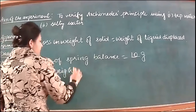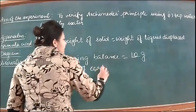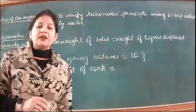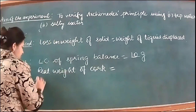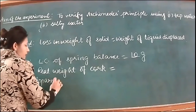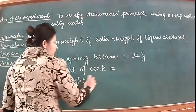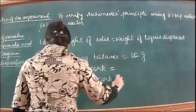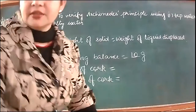We will find the real weight of the cork. Real weight means the weight of the object in air. The other is apparent weight — apparent weight means the weight of the object in water, what the water makes you feel.